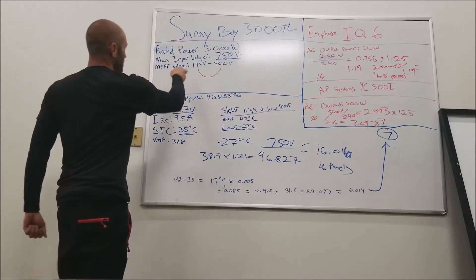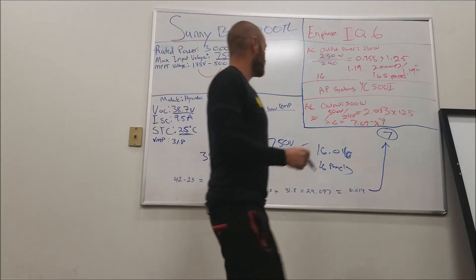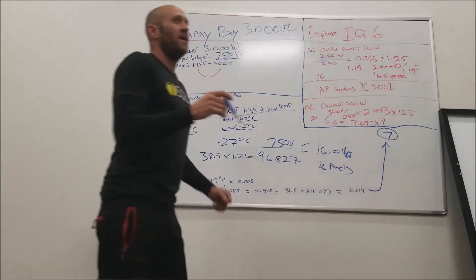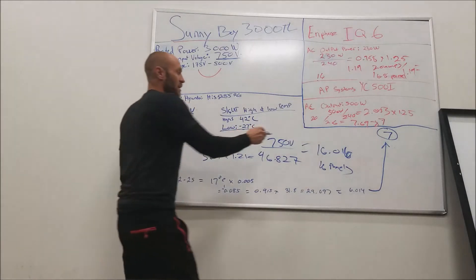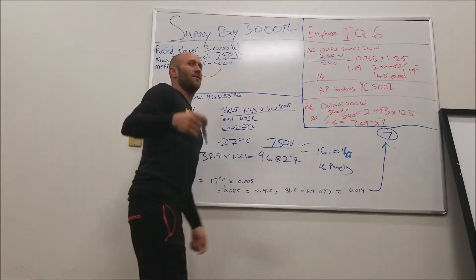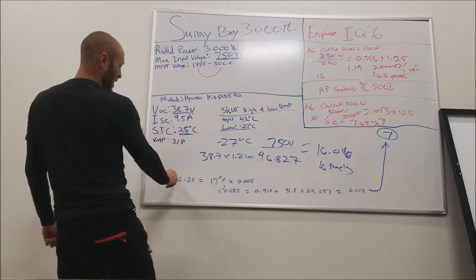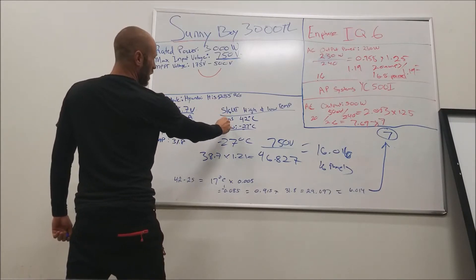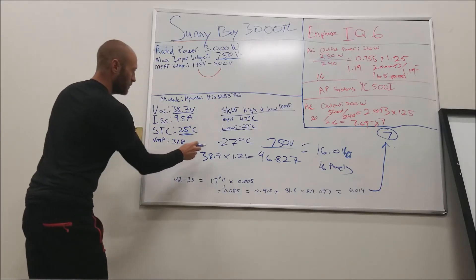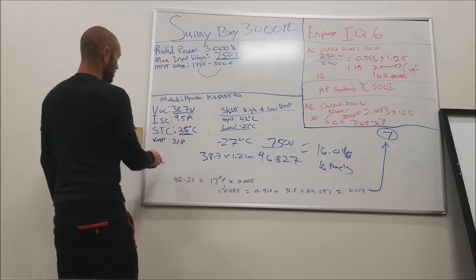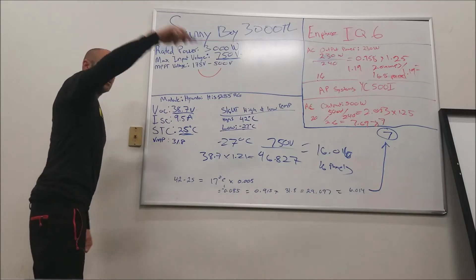Seven panels is how many you want on this string to get the inverter rolling and keep it in the maximum power point tracking range. Now if you want to know how many panels to stay within your efficiency range — not so many that it exceeds your max — you use VMP with the low temperature. Our low temperature is negative 27°C, correction factor 1.21. So 31.8 times 1.21 equals 38.478 volts.